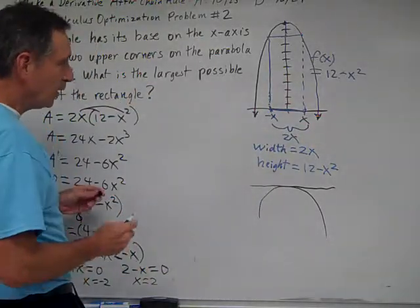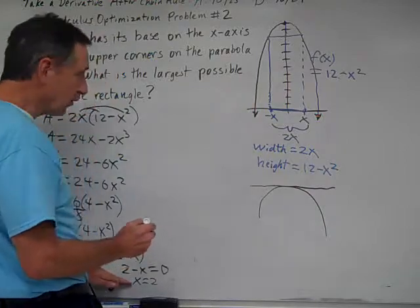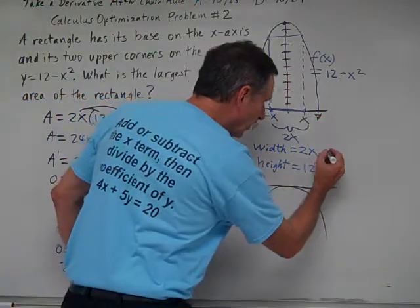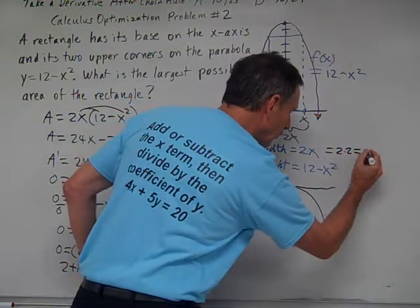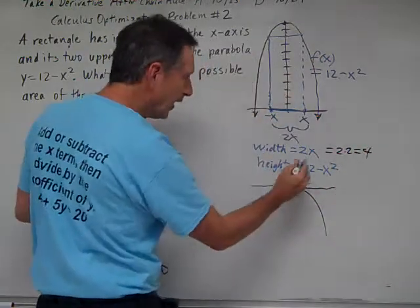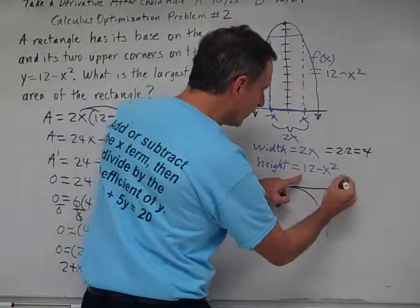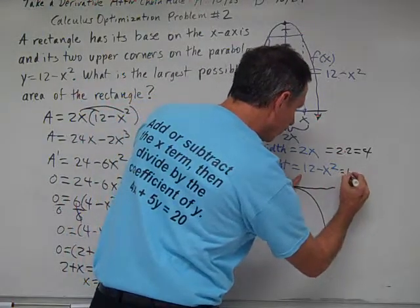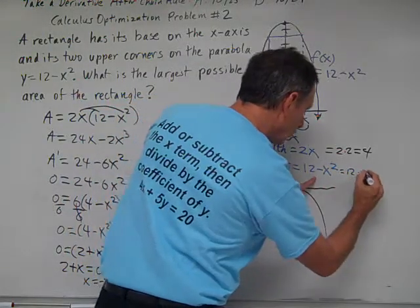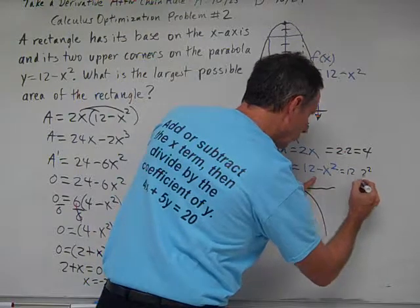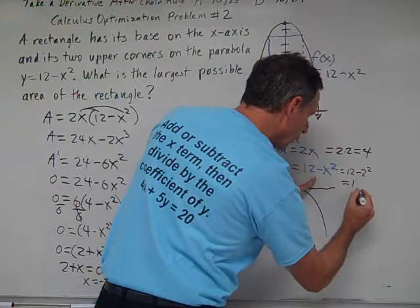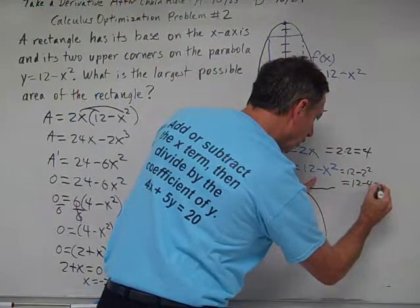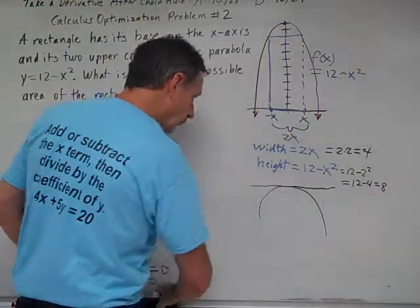And so what we have is, since 2 is our width. We will say our width is 2x, which will be 2 times 2, which equals 4. And our height is going to be 12 minus x squared, which is 12 minus 2 squared, which equals 12 minus 4, which equals 8.